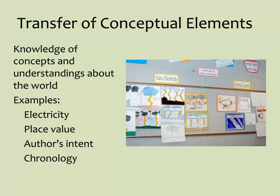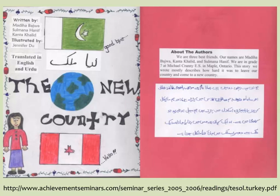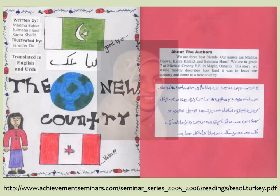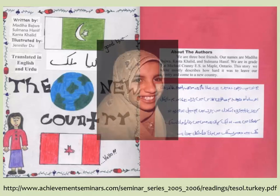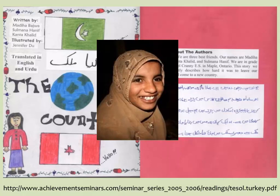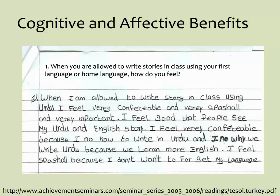Teachers can encourage students to use what they know to demonstrate what they are learning. One way to build conceptual transfer is to allow students to create bilingual products around content subjects. This story, in English and Urdu, was created by three girls. In composing the story, the three girls discussed their ideas primarily in Urdu but wrote the initial draft in English. By building on the students' varying levels of proficiency, Maria was able to participate in a grade 7 social studies unit, even though she had minimal knowledge of English. There are both cognitive and affective benefits to intentionally building on cross-linguistic transfer. This is how one of the girls described her feelings about her first language in the writing project.